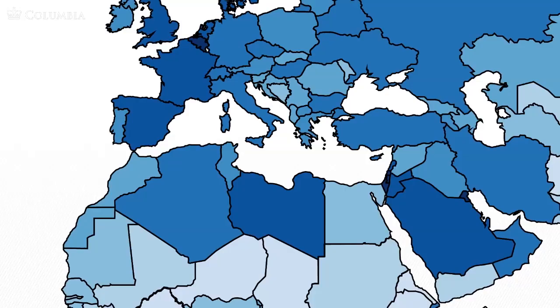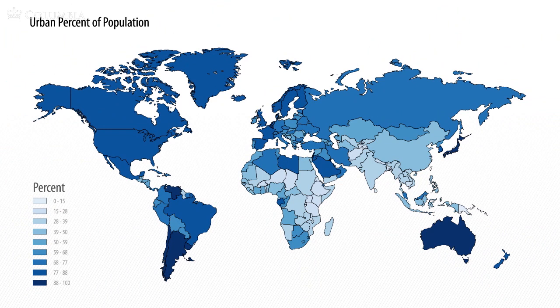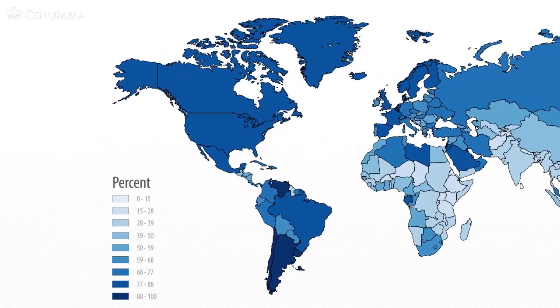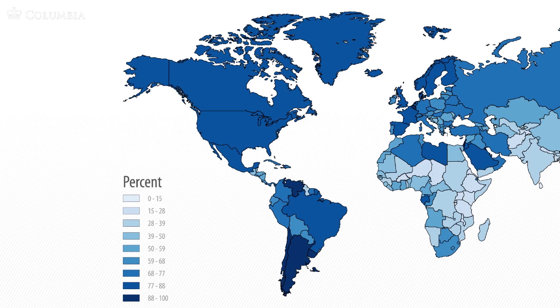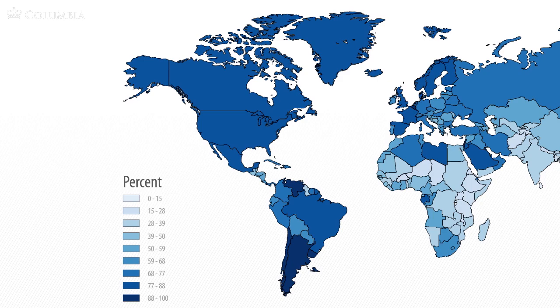If you look at the map of the proportions of populations in urban and rural areas, it resembles the map of income per person. The richer parts of the world tend to be more urban; the poorer parts tend to be more rural. The Americas — both North and South America — are very highly urbanized, at around 70 to 80% of the population. Tropical Africa is still quite rural, with perhaps 65 to 70% of the population living in rural areas and only around 30% in urban areas.